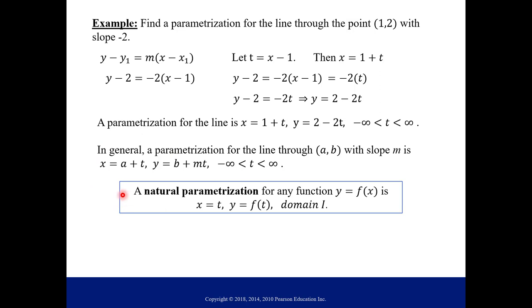Now there is what's called a natural parameterization for any function. f(x) = y is the function, and you can just say that x is t, and then y is just f(t). That's going to be on whatever the original domain is for that function. Using the example we just went over, a natural parameterization for the line we just worked on is just to say that x is t this time. Notice it's different from what we initially chose. We chose t is x - 1. So now x is t, so then you would just say y - 2 = -2(t - 1). Then you just solve this for y, so y = 4 - 2t. This is a different parameterization for the same line. I do want you to be aware that there are multiple parameterizations for the same curve.